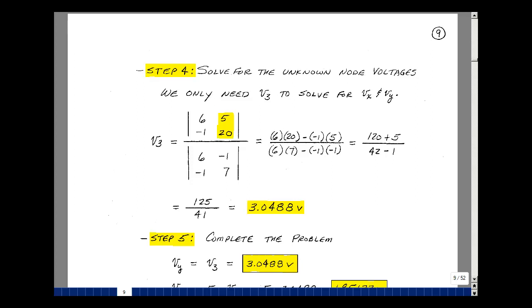Take a ratio of determinants. I have the matrix with 6 minus 1 minus 1 and 7. I'm going to replace the column associated with V3, which is actually the second column. Put the 5 and the 20 in the place of column 2 of our original matrix. Find the determinant, then it's 6 times 20 minus a minus 1. That turns out to be 125. In the denominator, it's 6 times 7 minus a minus 1 times a minus 1. That turns out to be 42 minus 1, so you get 41. That's 3.0488 volts.